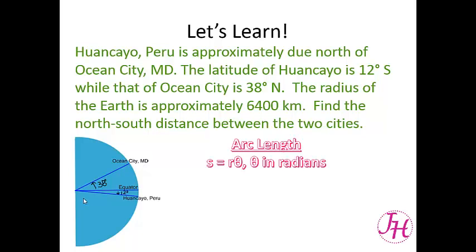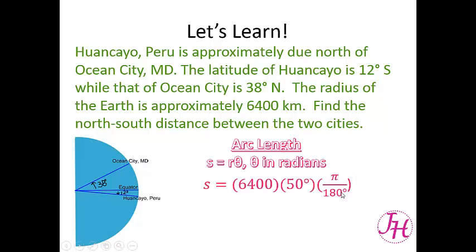Right now we are in degrees. So we plug in 6,400 for our radius, and then we have 50 degrees in between, but we need to convert that to radians, so we multiply by π over 180. Remember, to convert degrees into radians we multiply by π over 180. When we simplify that we get 5,585 kilometers. So the length of this arc from Ocean City to Huancayo is 5,585 kilometers.